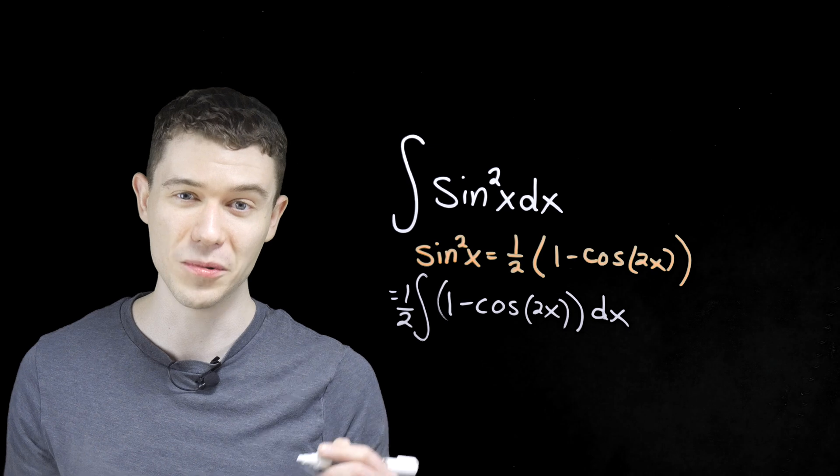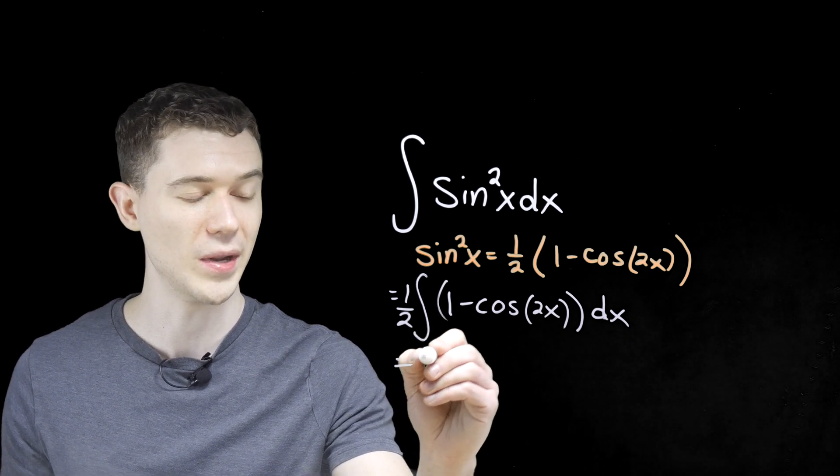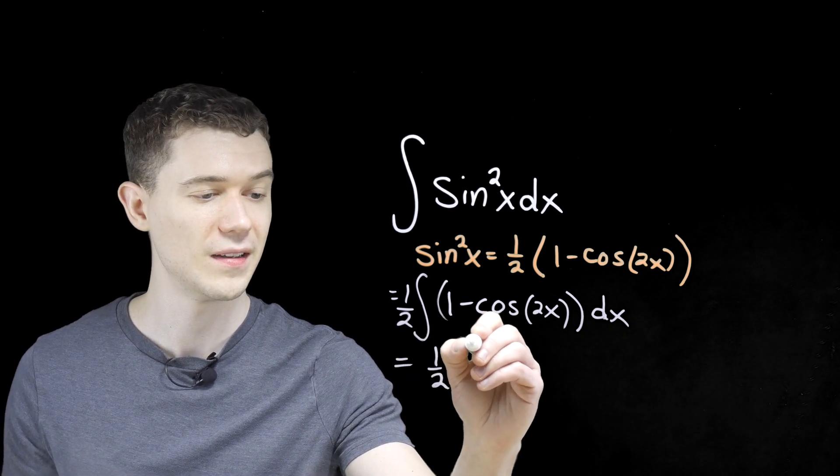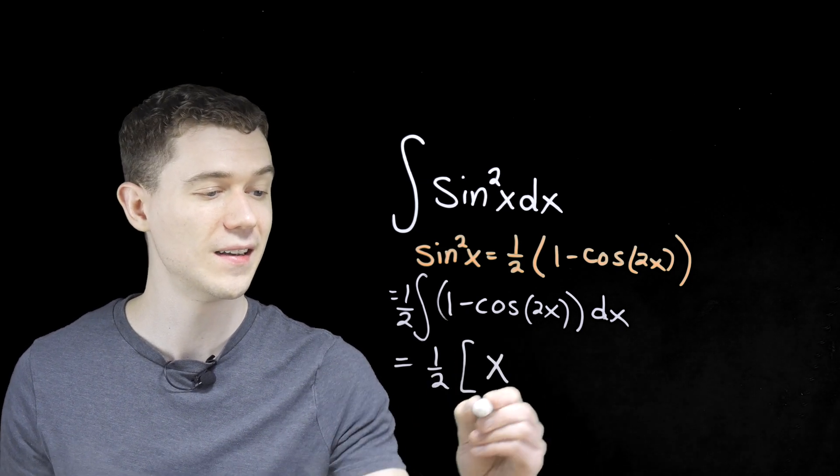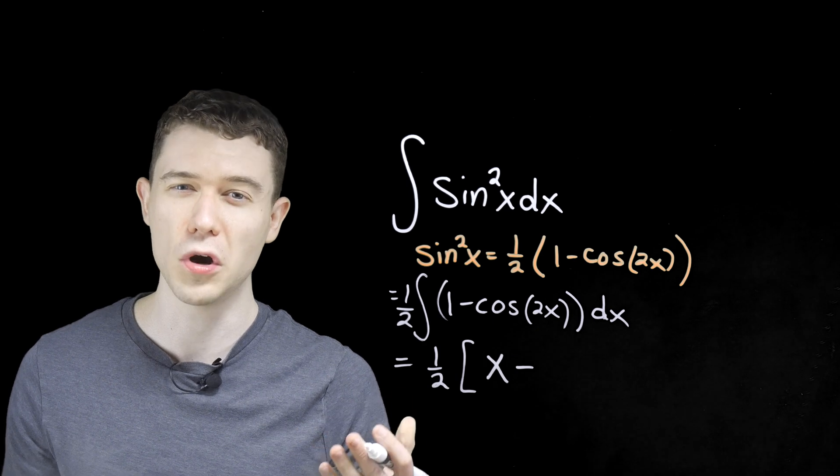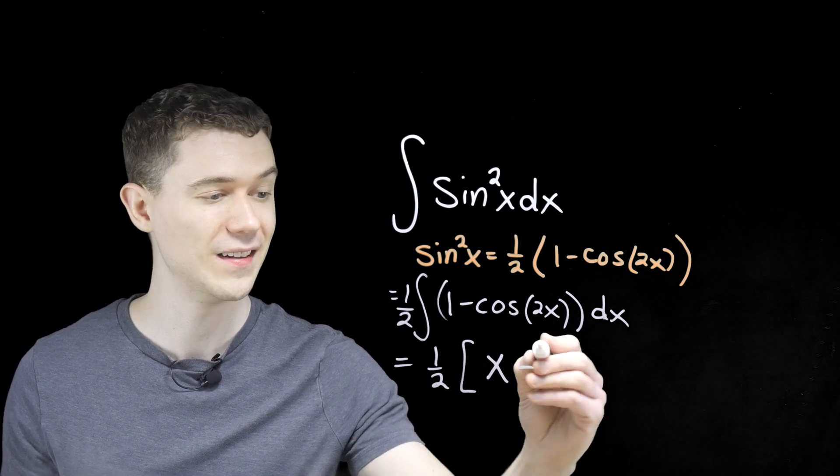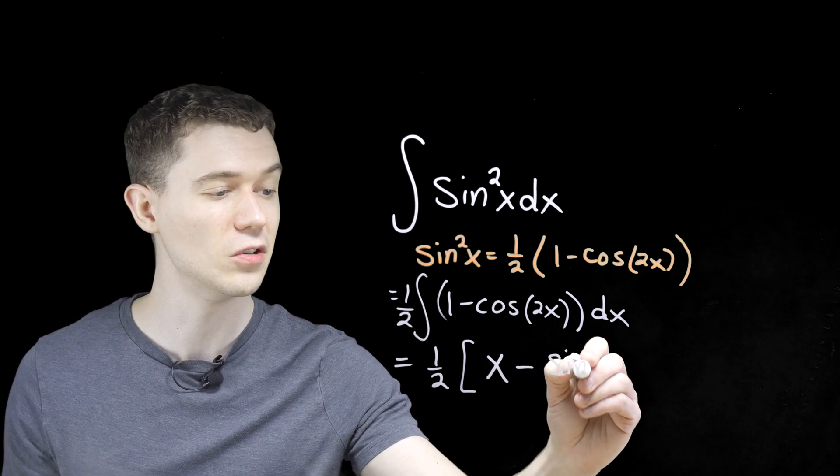And these are things we're able to antiderive. So we have the one-half, the antiderivative of 1 dx, that's simply x, minus, the antiderivative of cosine is sine. So this will be a sine of 2x.